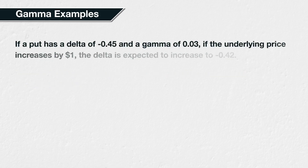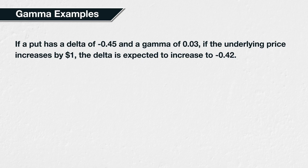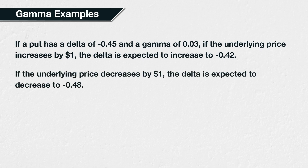If a put option has a delta of minus 0.45 and a gamma of 0.03, if the underlying price increases by $1, the delta of the option is expected to increase by 0.03 to minus 0.42. If the underlying price decreases by $1 instead, the delta of this same option is expected to decrease to minus 0.48, again displaying the expected behaviour of getting longer as price increases, and shorter as price decreases.